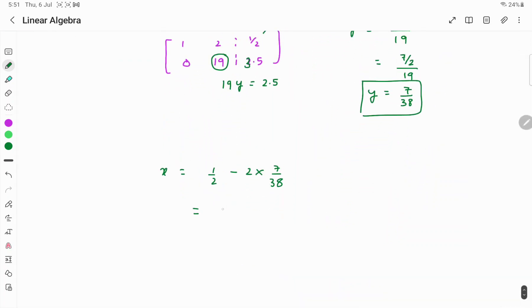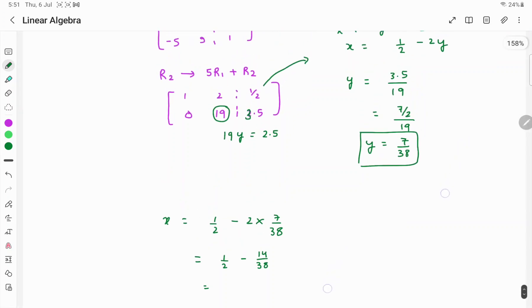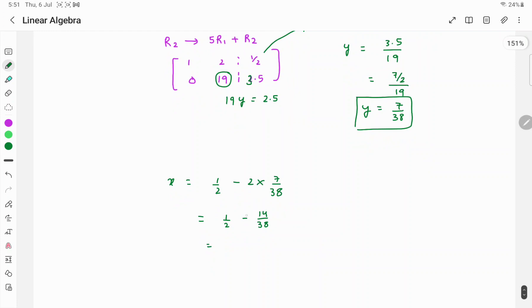So if you want to do it, you can write 1 by 2 minus 14 by 38. If you multiply by 19, it will become 38, so it will be 5 by 38. So W_S, what you are getting, is equal to (5/38, 7/38). It is your answer.